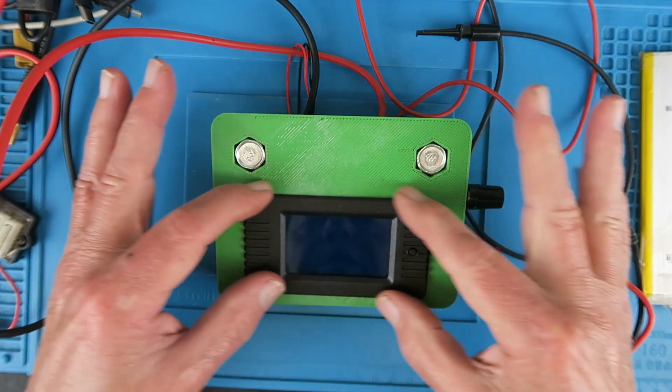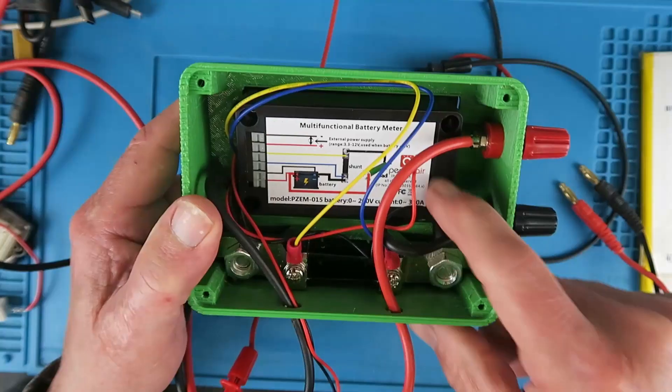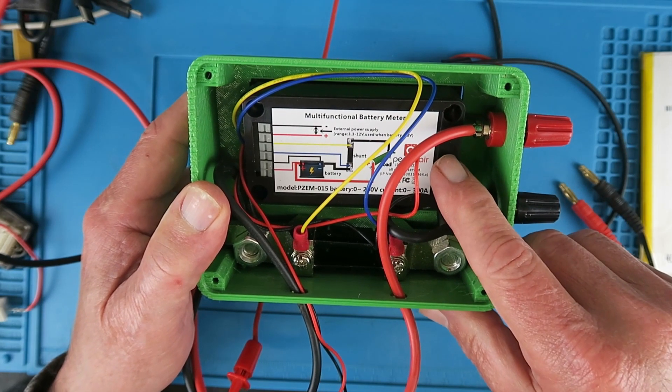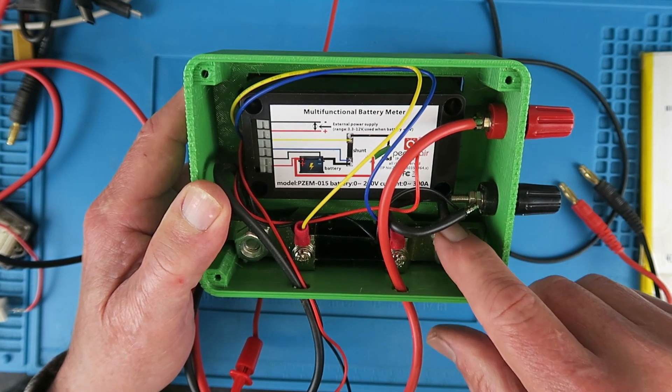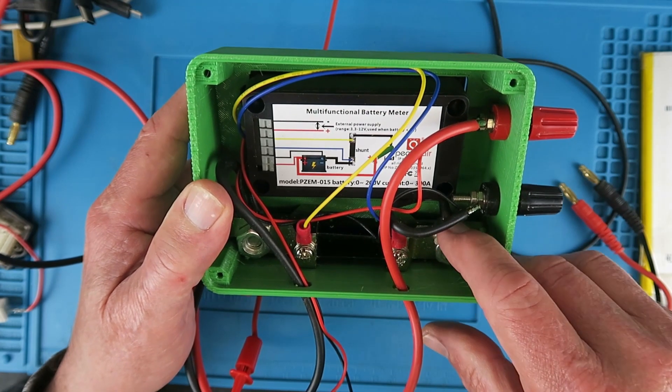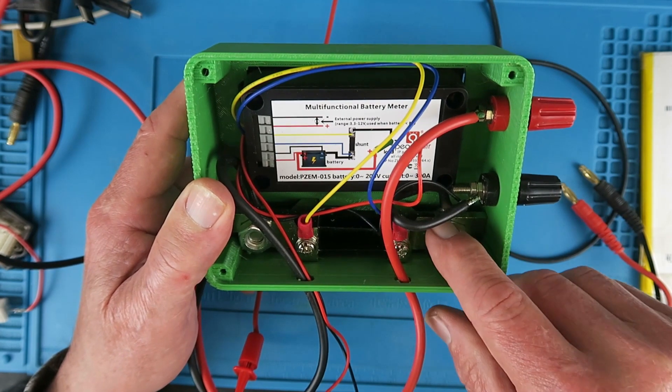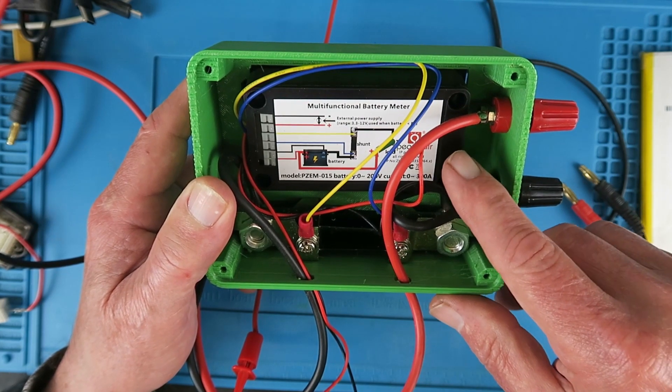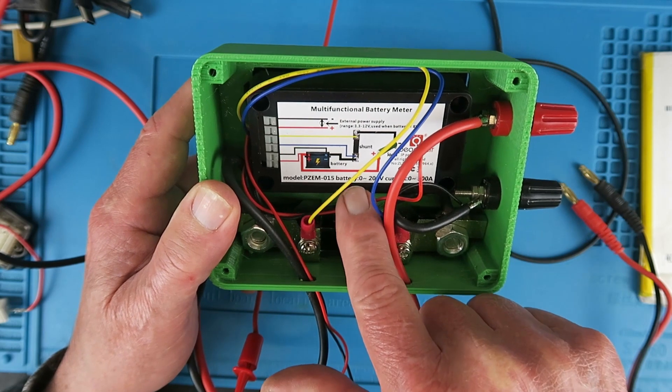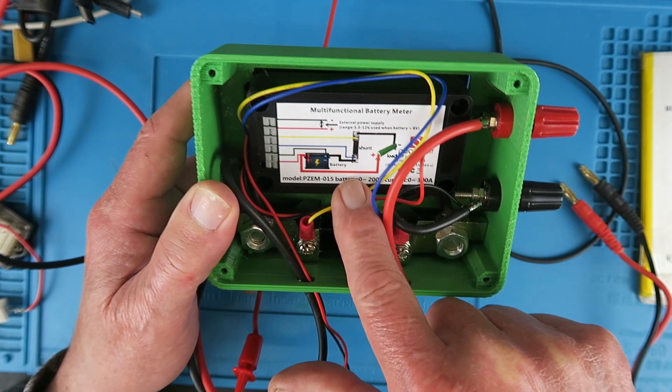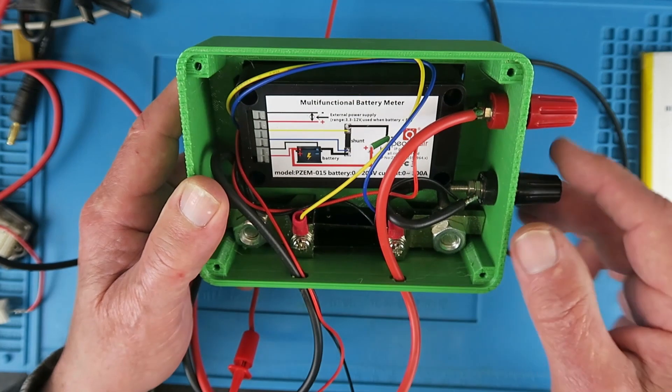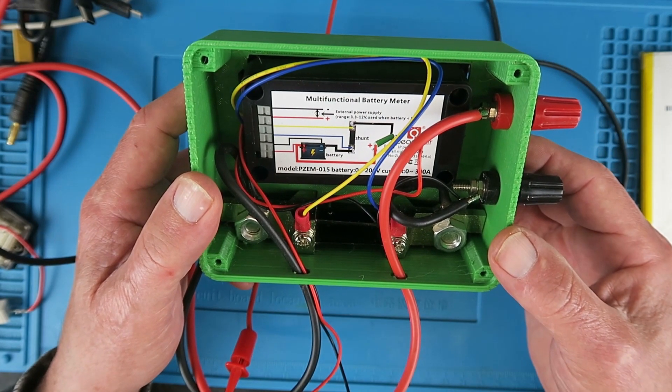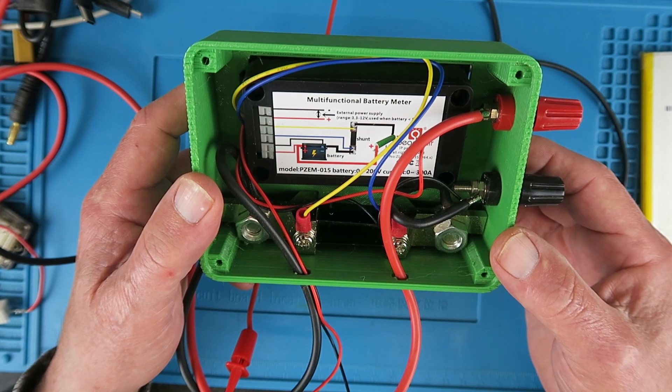What you actually receive is the module itself and this module is available in many different variations, most of which come with a shunt of some kind. This is the 200 amp shunt that I've got in here. There are available up to 300 amps. This unit is capable of measuring up to 200 volts DC. In addition there are variations of this module which work on AC power as well to measure and monitor that in kilowatt hours.